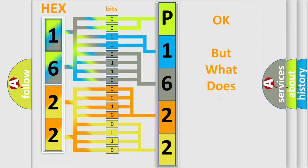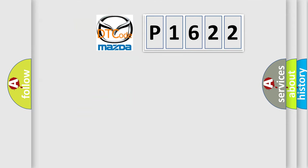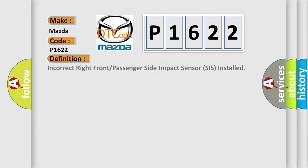We now know in what way the diagnostic tool translates the received information into a more comprehensible format. The number itself does not make sense to us if we cannot assign information about what it actually expresses. So, what does the diagnostic trouble code P1622 interpret specifically for Mazda car manufacturers? The basic definition is: Incorrect right front or passenger side impact sensor (SIS) installed.